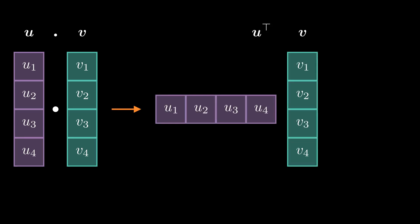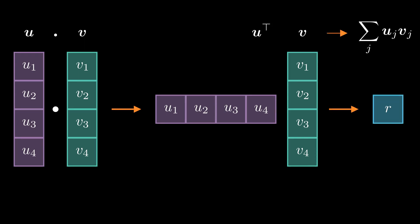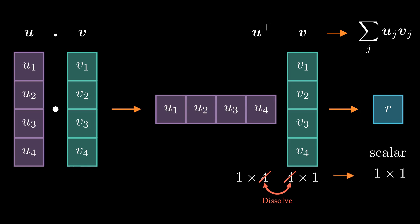Let's see an example of the dot product in action. We have two column vectors u and v and we want to calculate their dot product. First we flip u to get the row vector u transpose. Then we compute the dot product by multiplying corresponding elements and summing them, and the result will be a scalar number. Looking at the dimensions: u transpose is 1 by 4 and v is 4 by 1. The two fours in the middle get dissolved during summation, and what remains is 1 by 1, which is a scalar.